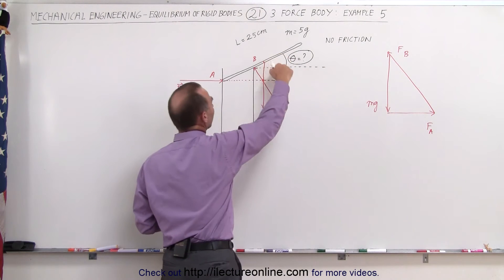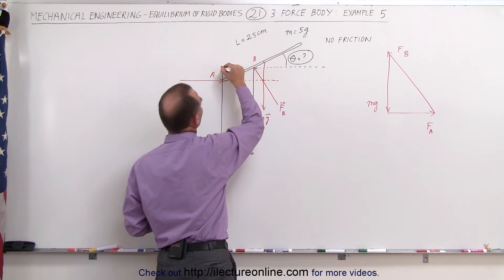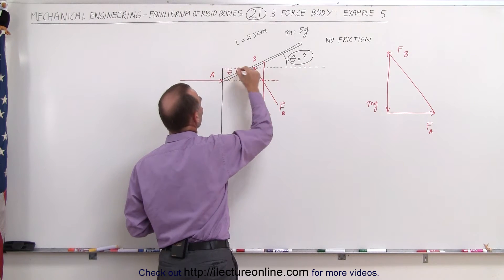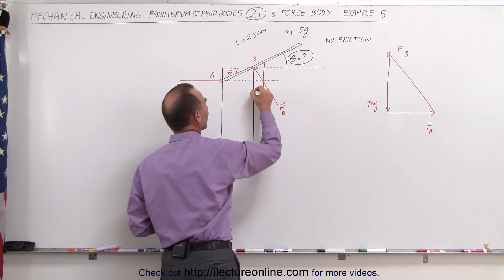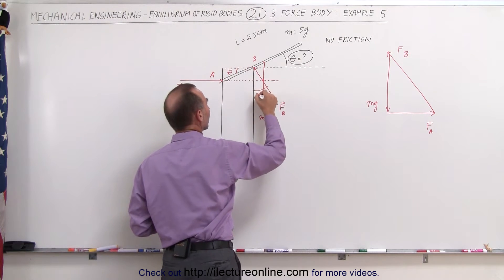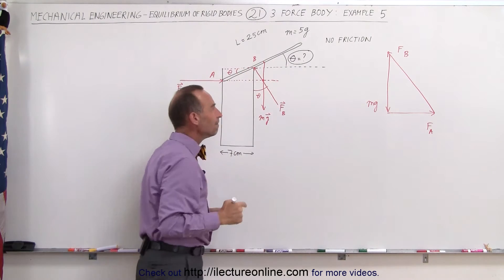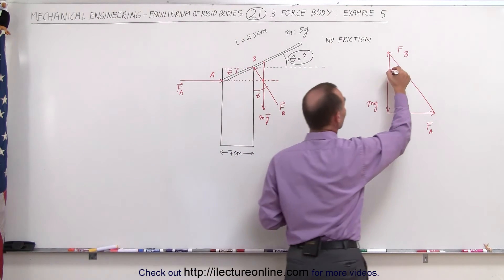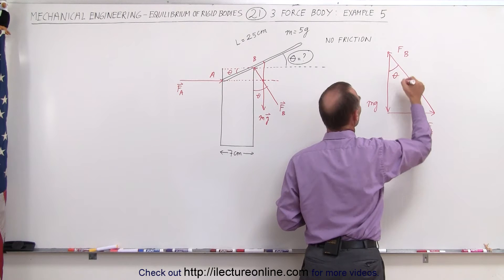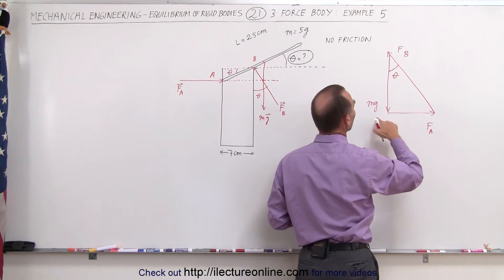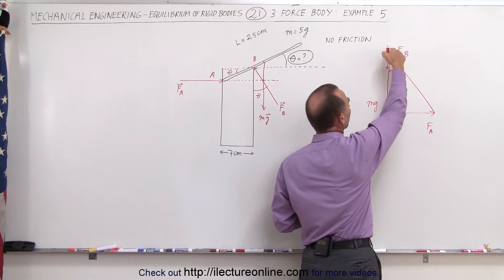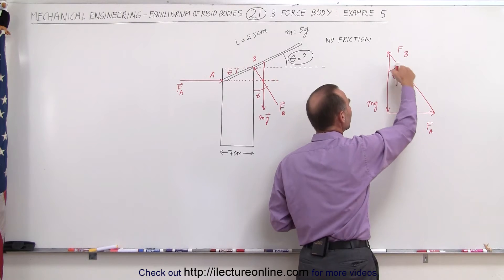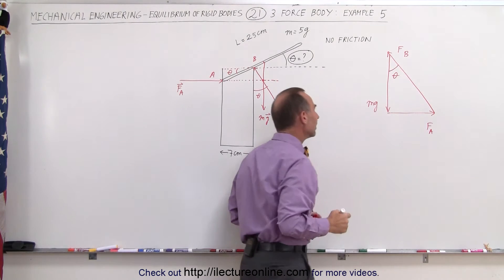Notice that this angle theta here must be the same as this angle theta there, which must be the same as this angle theta there. So those angles are all the same, which means that the angle over here must be angle theta as well. So now we have a relationship between the force at B, the force at A, and Mg through the angle theta.